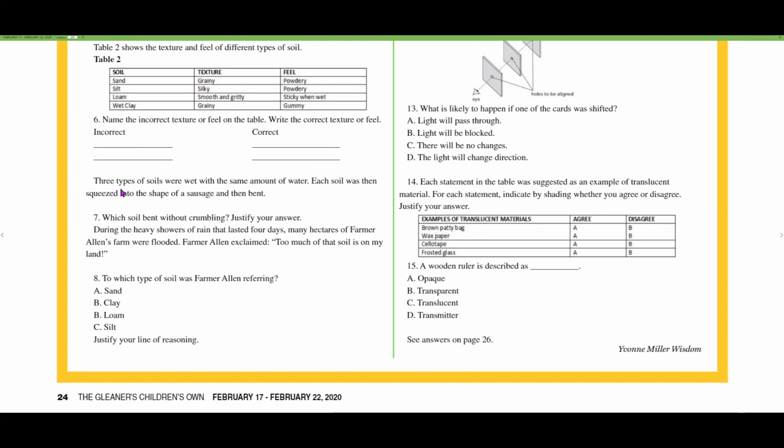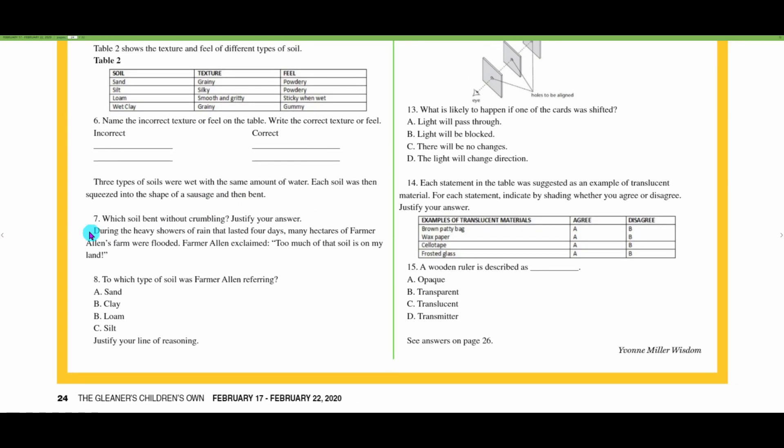Three types of soils were wet with the same amount of water and each soil type was squeezed into the shape of a sausage and then bent. Number seven says which soil bent without crumbling and justify your answer. That to me would be clay, because clay like play dough, you could take it and shape it and bend it, make circles and different shapes. We could say that clay is very plastic in nature.